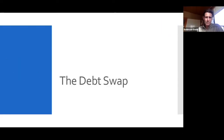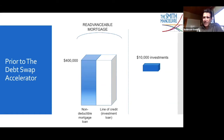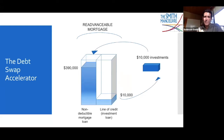The first accelerator is the debt swap. It's not uncommon for someone to have investments — mutual funds, ETFs, whatever it is — and be content to let them grow. What they can do with a re-advanceable mortgage is redeem $10,000 of investments for cash, then take that cash and prepay their mortgage by that $10,000. That $400,000 mortgage goes down to $390,000 in one day. You then re-borrow that $10,000 and purchase the exact same investments — or a different one — taking care about superficial loss rules. This can all be accomplished within a week or ten days.